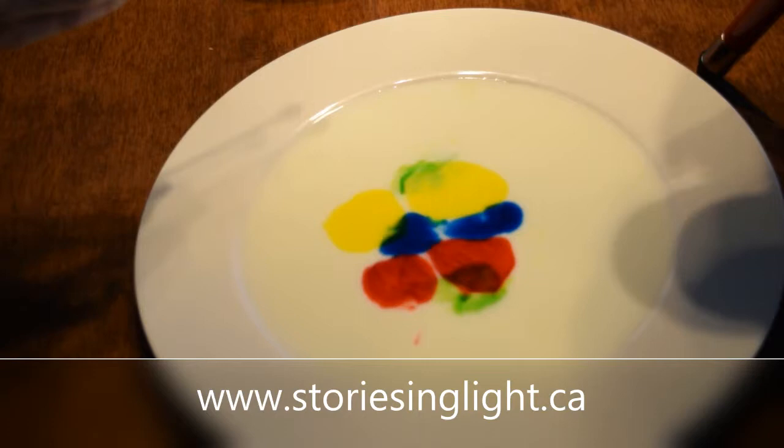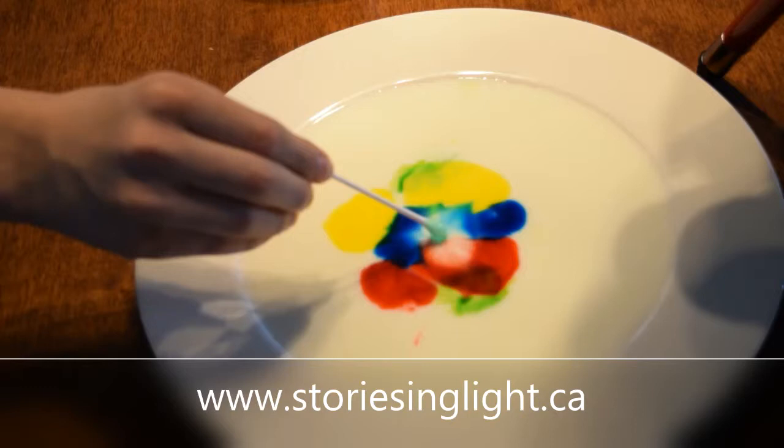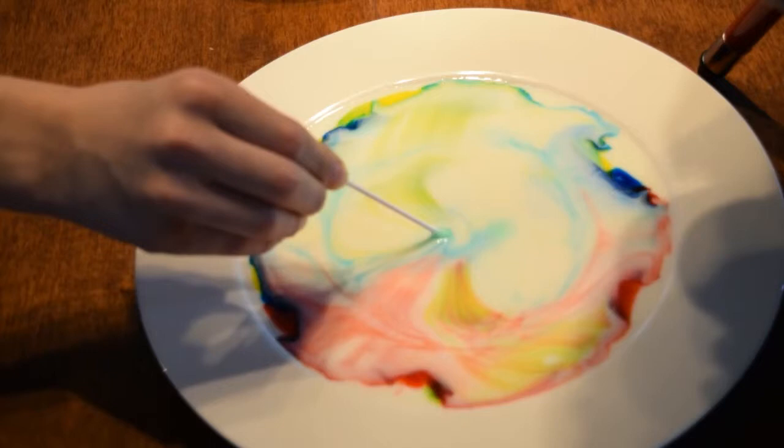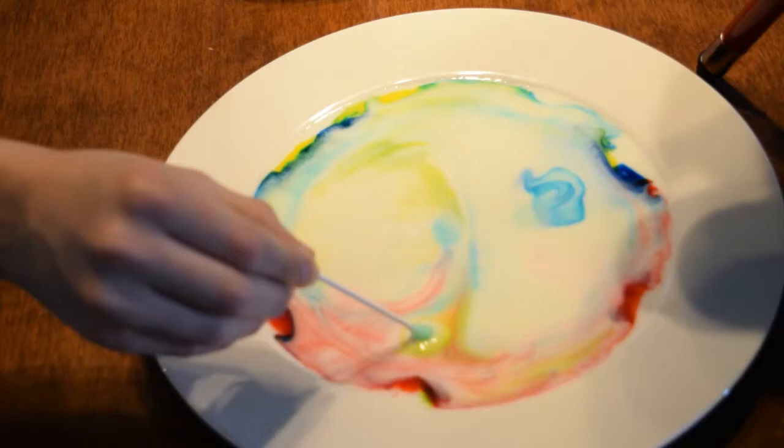Andrew's going to put the dish soap on a q-tip into the three, two, one. Boom. As you can see, the fat molecules are binding to the food coloring and making it move in different kaleidoscope patterns.